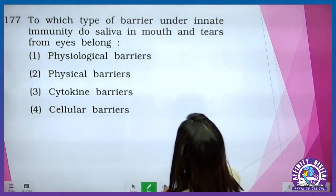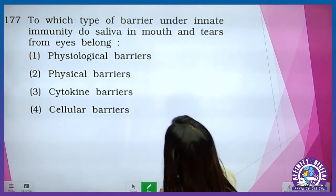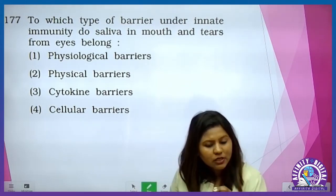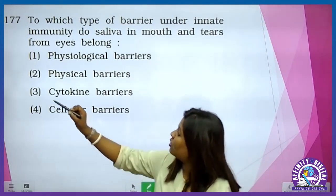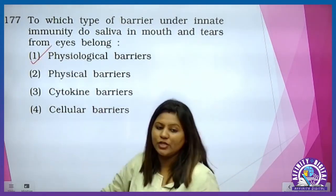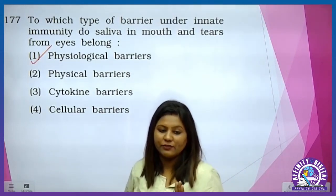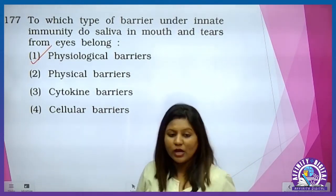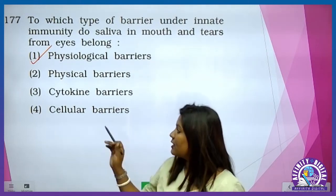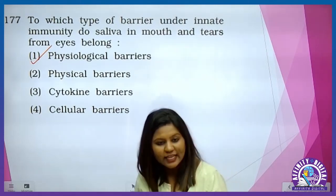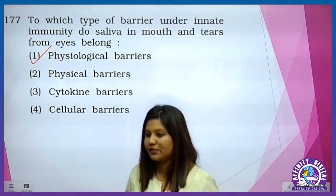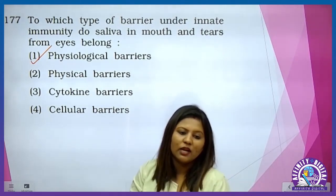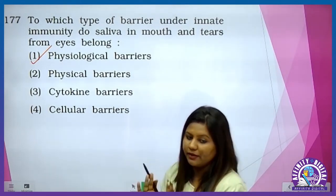To which type of barrier does saliva in the mouth and tears from the eyes belong? Any kind of secretion belongs to physiological barrier. Physical barrier jo hai wo hai mucous membrane and skin. Cytokine barrier, cellular barrier — those are different. Koi bhi direct secretion from our organ is included under physiological barrier.